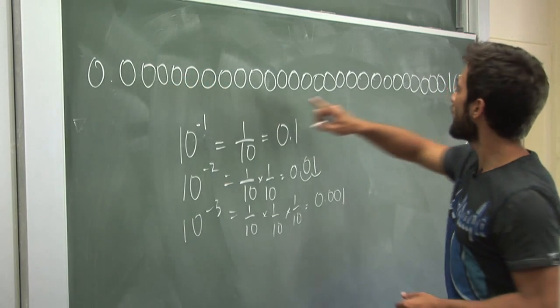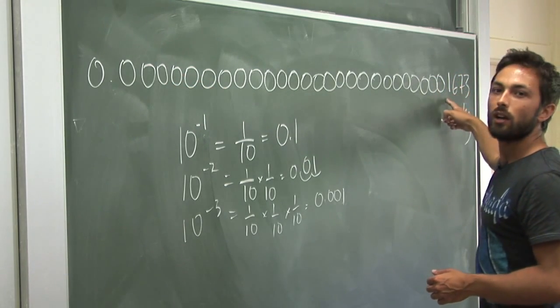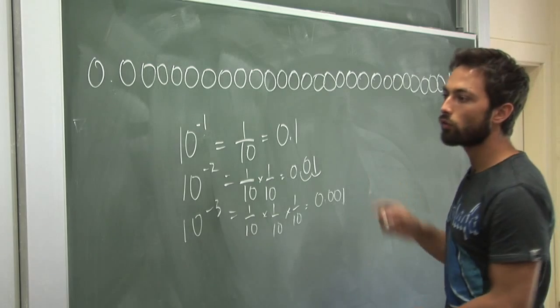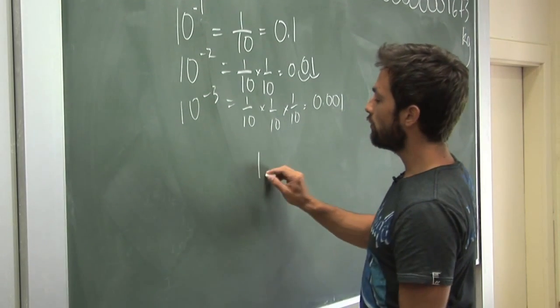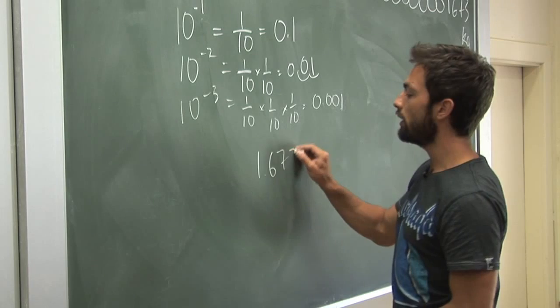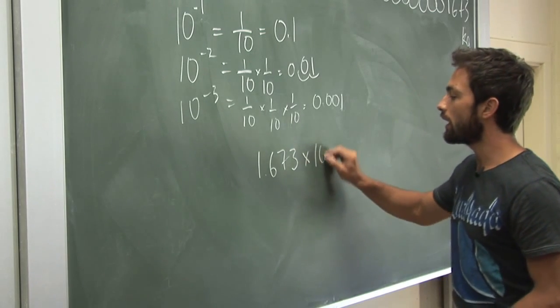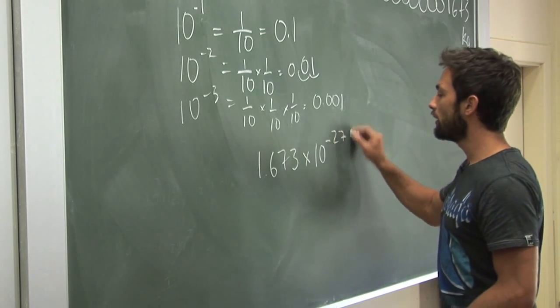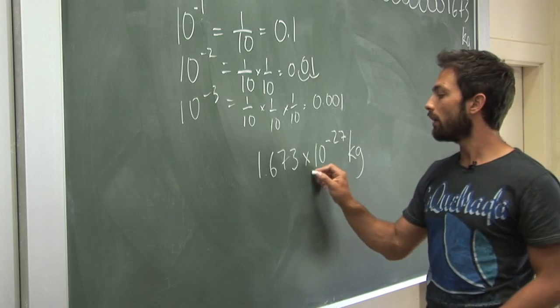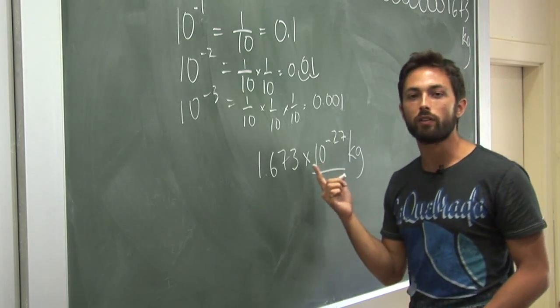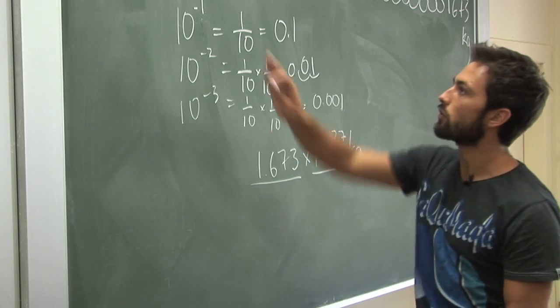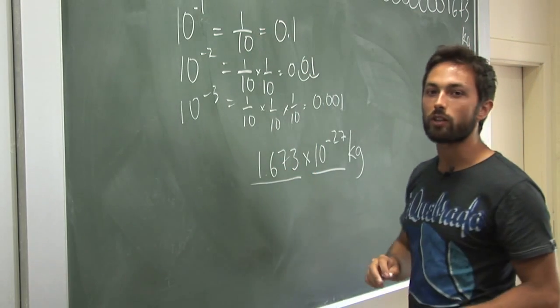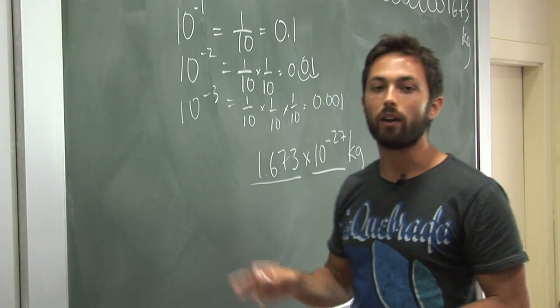So in this case, I have a 1 that is actually 27 places to the right of the decimal. So I can write the mass of a proton as 1.673 times 10 to the minus 27 kilograms. And this 10 to the minus 27 has the function of putting this number, 1.673, 27 decimal places to the right of the decimal point.